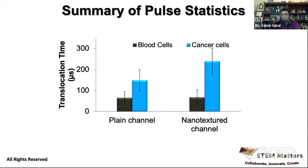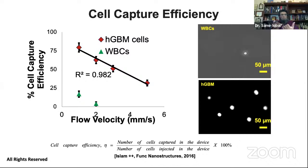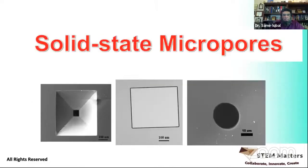We also studied the effect of flow velocity: if you push cells too fast, the capture sensitivity goes down. For HGBMs — brain tumor cells — and WBCs — white blood cells — pushing them too fast reduces sensitivity, which makes intuitive sense: you are not giving enough time for those cells to react with the surface and get captured. These are physical studies of the lab-on-chip device to get the best results out of it.